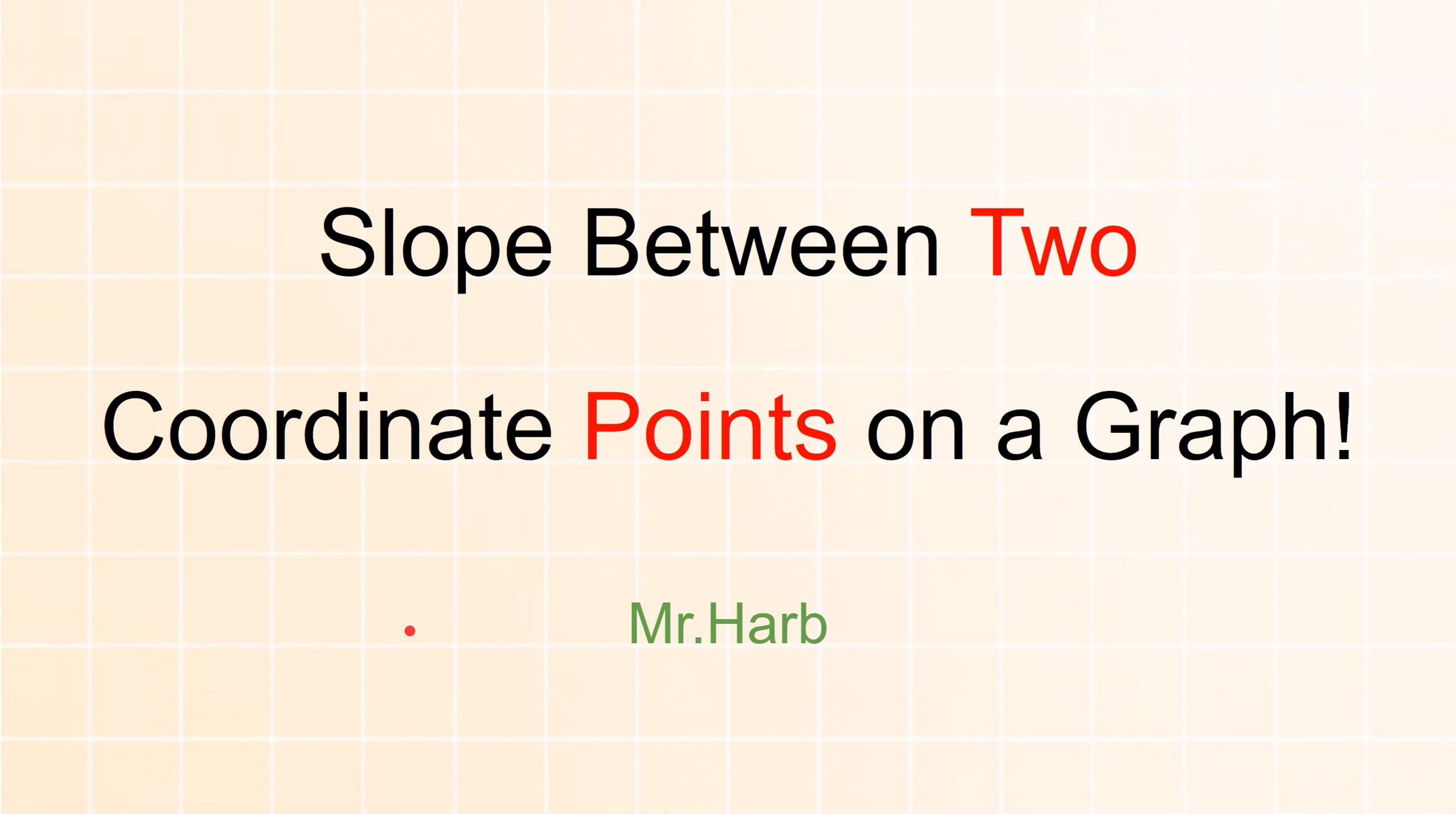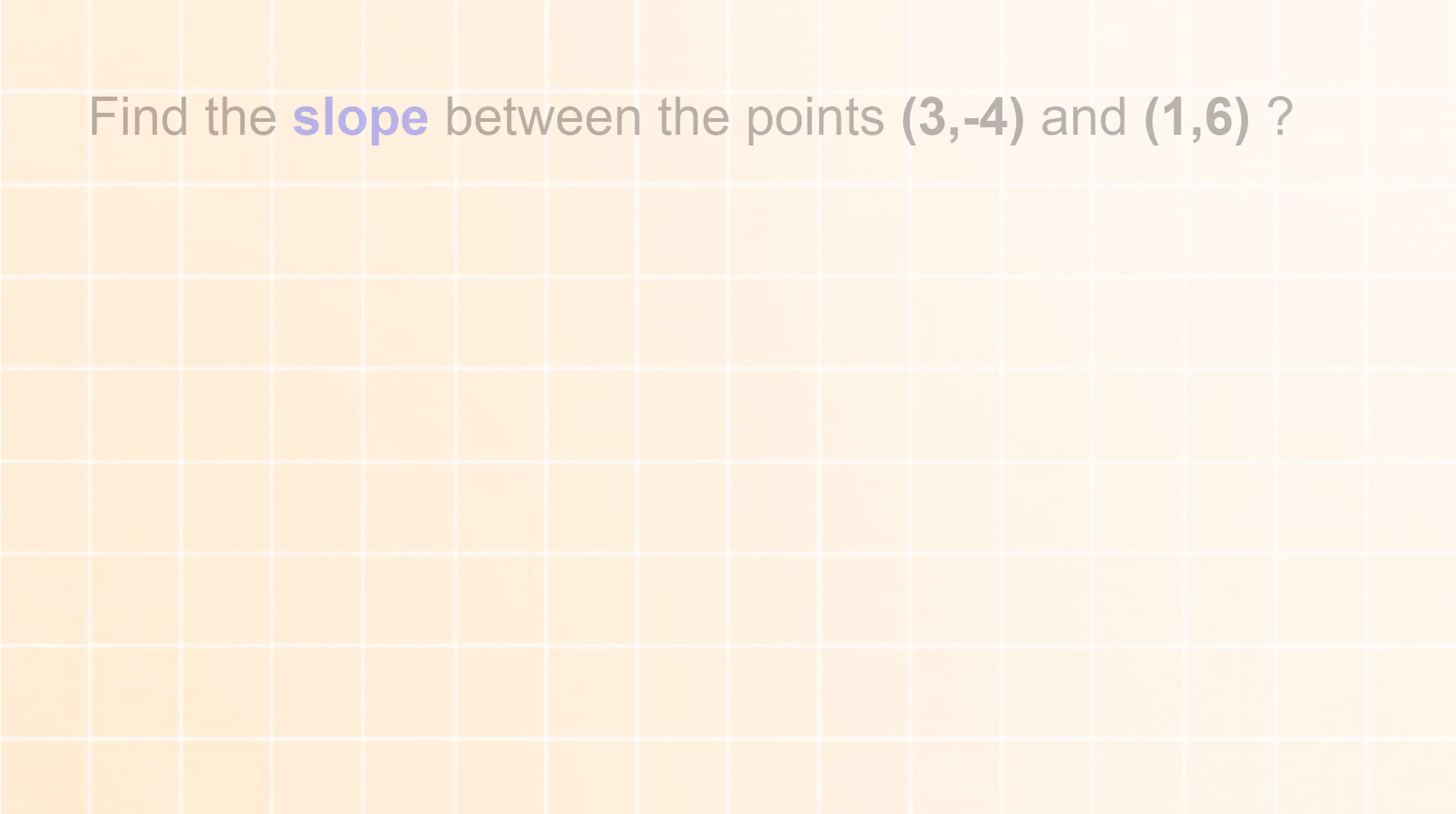Slope between two coordinate points on a graph. Find the slope between the points (3, -4) and (1, 6).